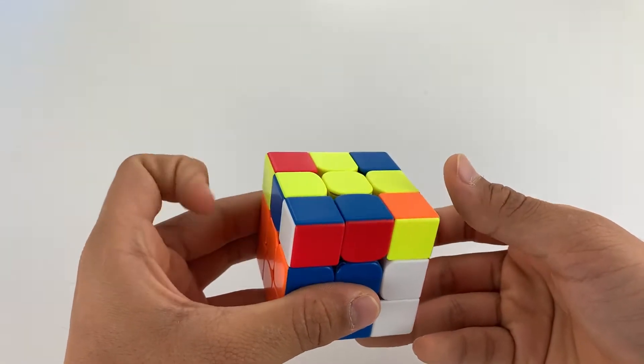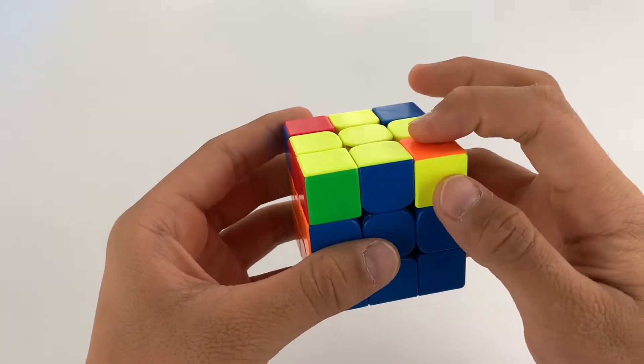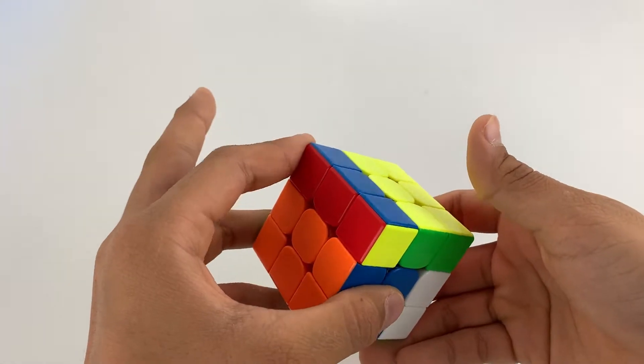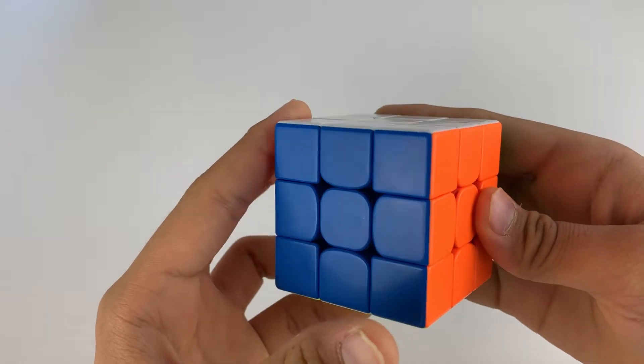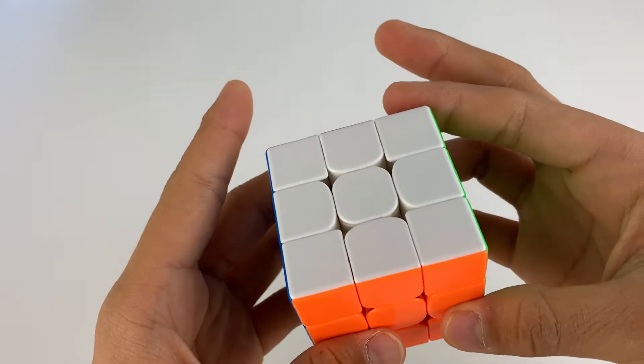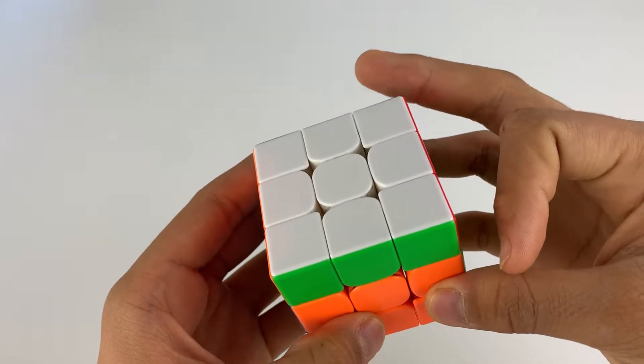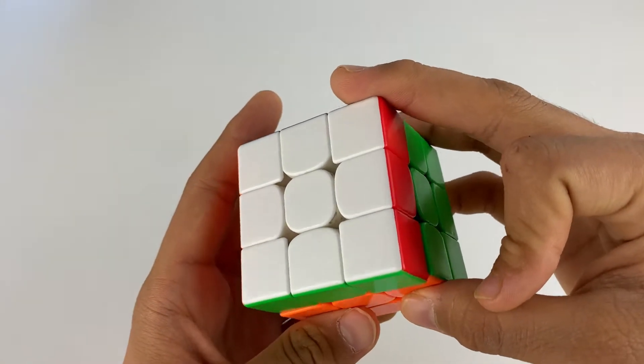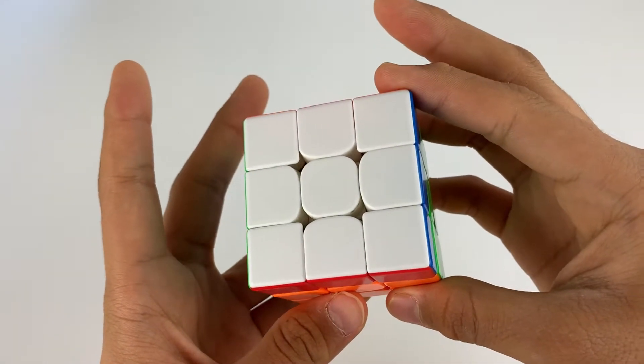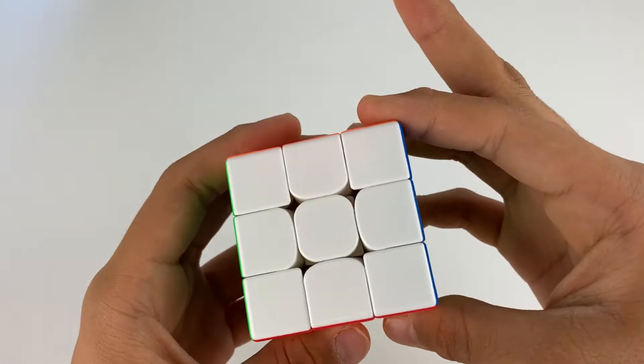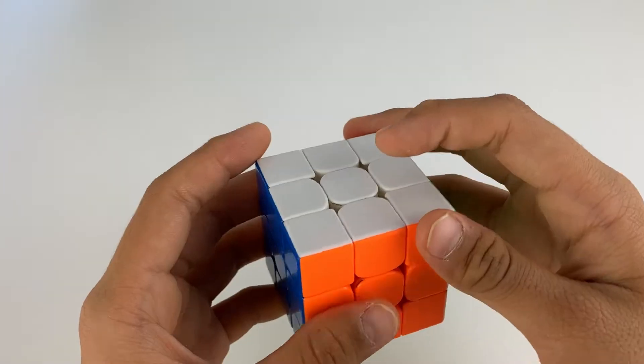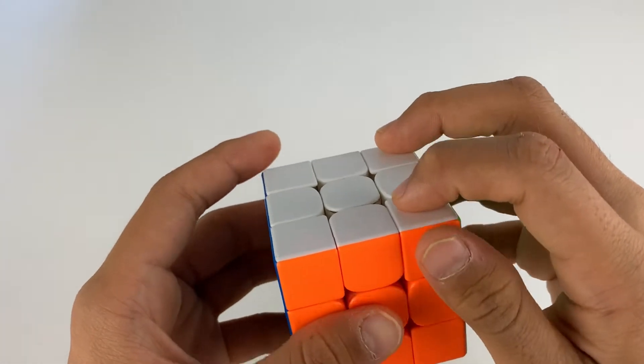you can do this. So the way you can do the U2 finger trick is by doing a normal U move followed by another one with your middle finger. This will result in a pretty fast sequence of moves. Soon enough when you get faster, your Sunes will look exactly like this.